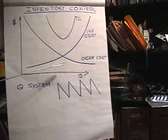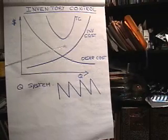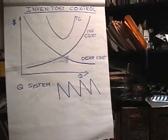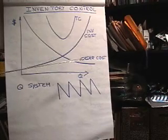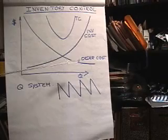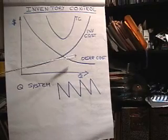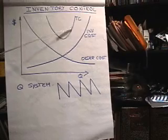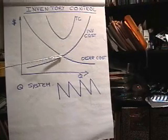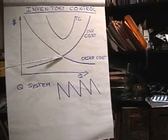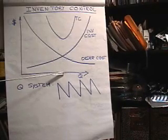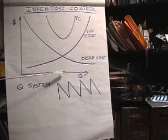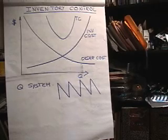But your order costs decrease as your order quantity increases because you have to order fewer times. That's like processing the paperwork, the employee cost, whatever goes into the order cost. So the total cost function is minimized at the point where the two cost functions intersect. And that would be the optimal order quantity right there that we're going to find in the next example with the EOQ.